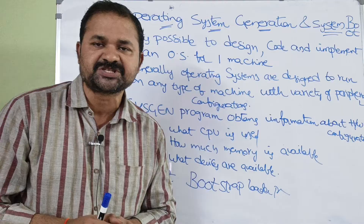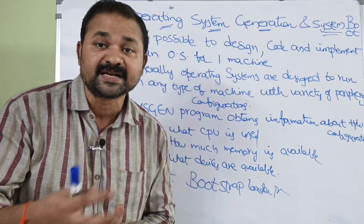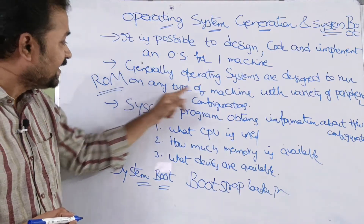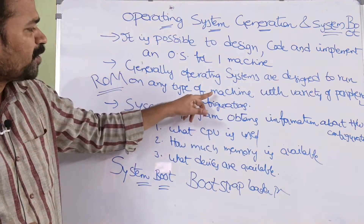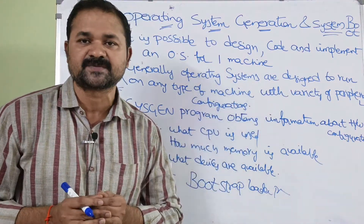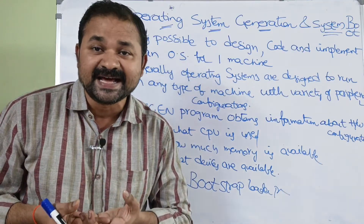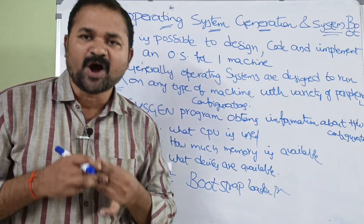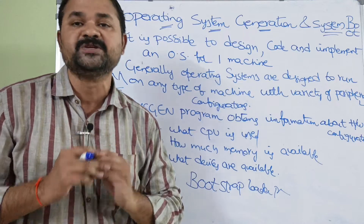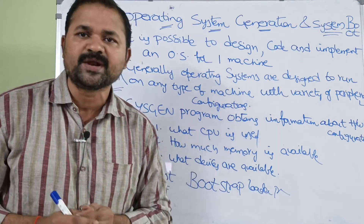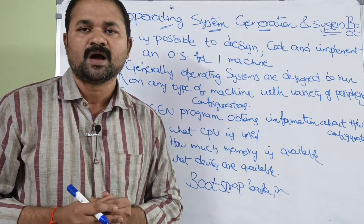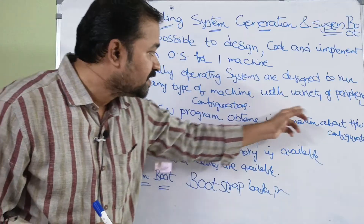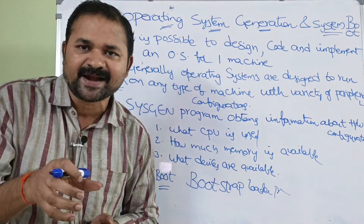We can't use that operating system on another machine. That's why it is better to generate an operating system that can run on any type of machine with a variety of peripheral configurations. Generation means to design, code, and implement an operating system that can be run on any type of machine — whether it is a single user system, multi-programming system, multi-tasking system, or batch system — with a variety of peripheral configurations.